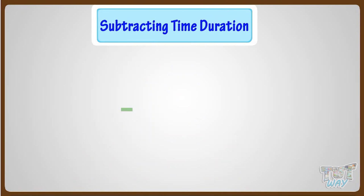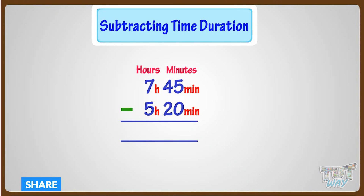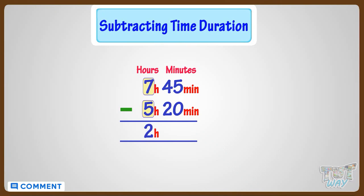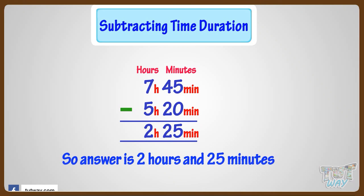Now let's learn how we can subtract time. We have to subtract 5 hours 20 minutes from 7 hours 45 minutes. While subtracting time, the same rule is to be followed: subtract hours from hours and minutes from minutes. Subtracting 5 hours from 7, we are left with 2 hours. Now subtract minutes from minutes: subtracting 20 from 45 minutes, we are left with 25 minutes. So our answer is 2 hours 25 minutes.